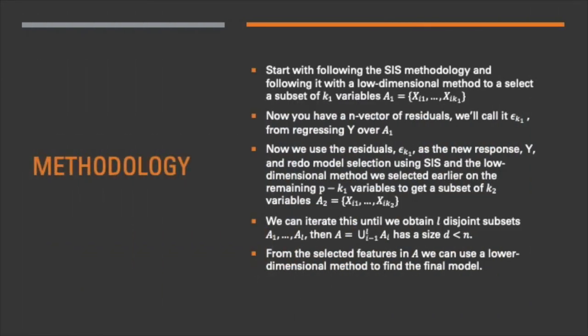The process of Iterative Sure Independent Screening is as follows. The first step is, we select a subset of k1 variables, that is, x1, x2, all the way to x_k1, using an SIS-based model selection method, such as SIS-SCAD or SIS-LASSO. As a result of doing this, we will have an n-vector of the residuals from regressing the response y over xi1 to xi_k1.